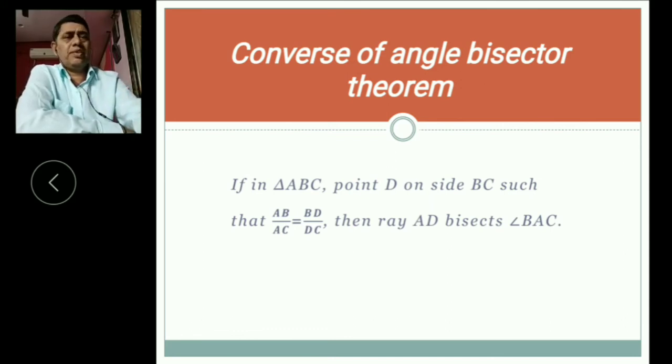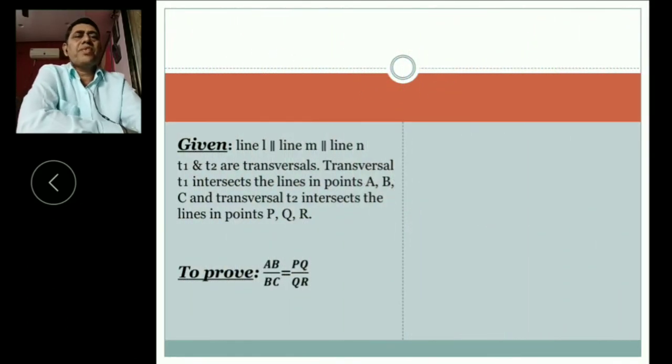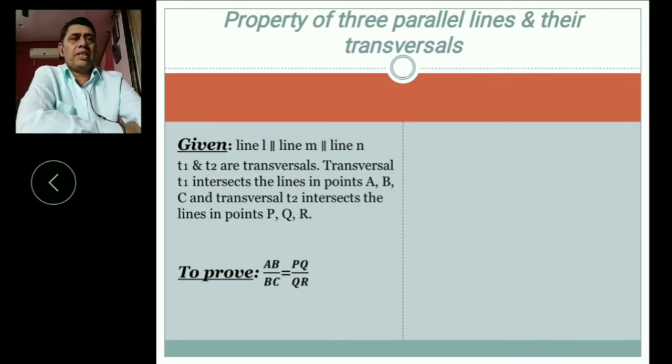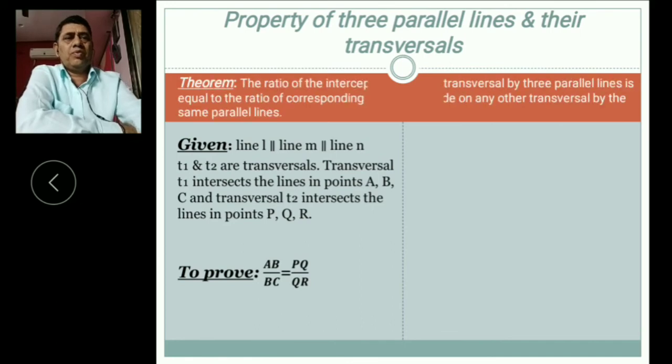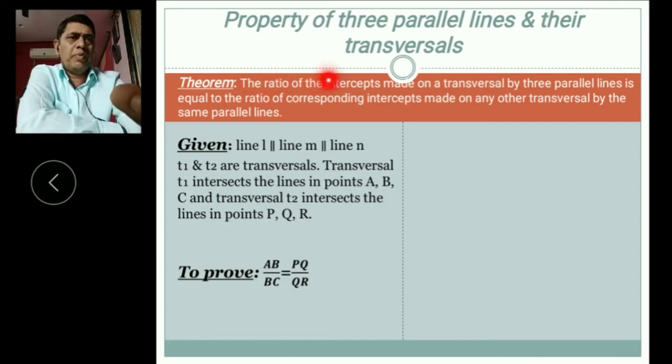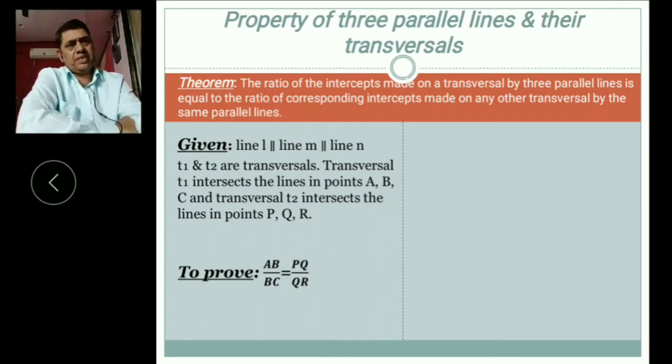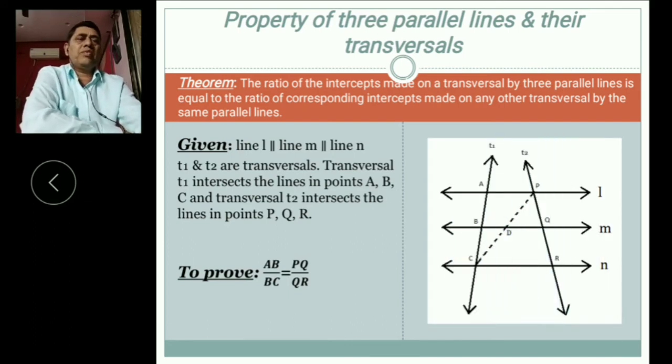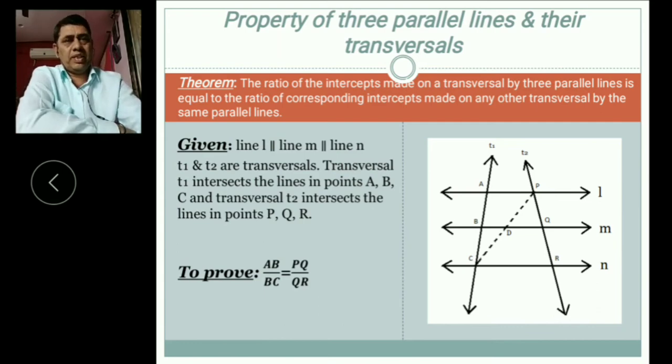Right, now next: property of three parallel lines and their transversals. What is property? The ratio of the intercepts made on a transversal by three parallel lines is equal to the ratio of corresponding intercepts made on any other transversal by the same parallel lines.